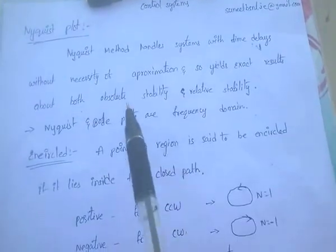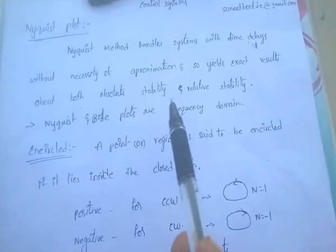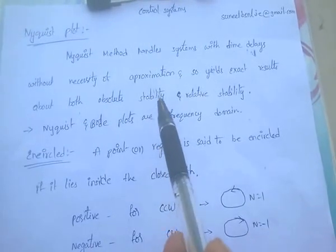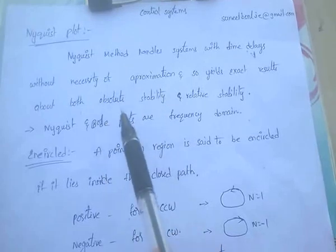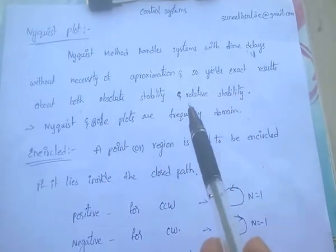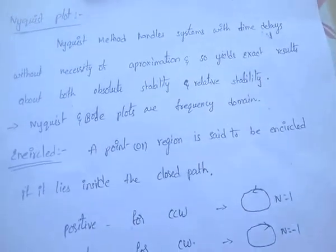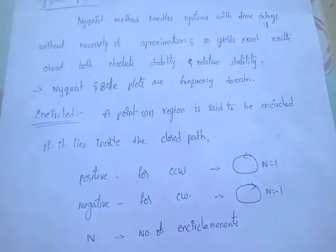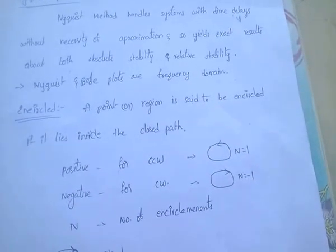What are absolute stability and relative stability? Absolute stability gives only yes or no information — that is, whether the system is stable or unstable. But relative stability gives complete information about stability. Nyquist and Bode plots are frequency domain methods.